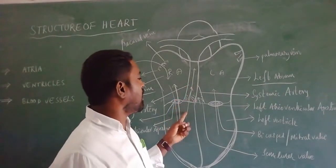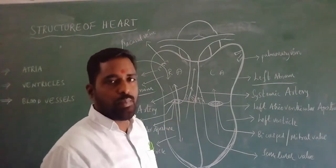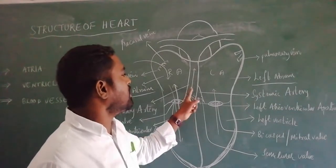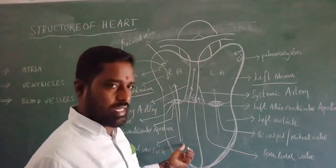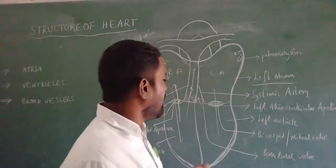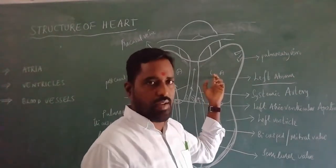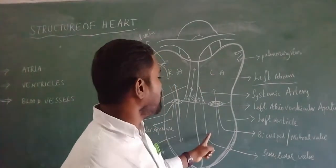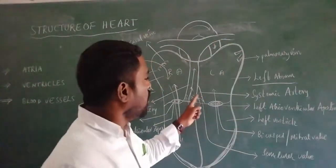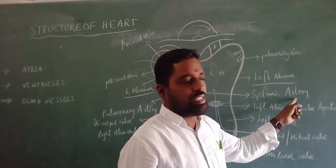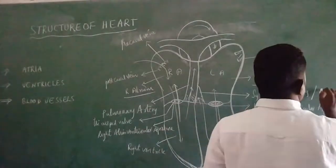The opening of the pulmonary artery is guarded by three pairs of semilunar valves. The left ventricle receives oxygenated blood from the left atrium and pumps it to the body parts for metabolic activities through the systemic artery, which is the largest artery. This largest artery is called the aorta.